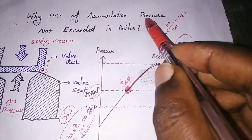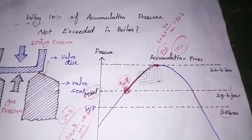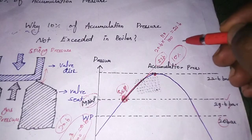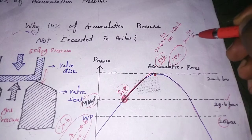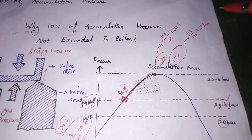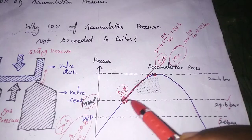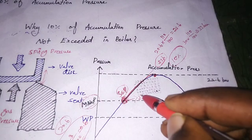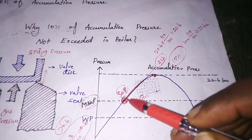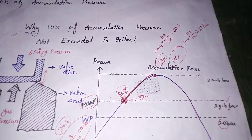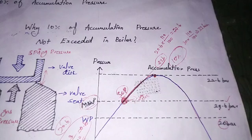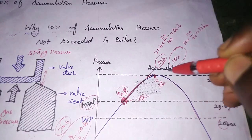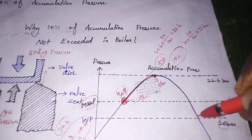This 10 percent accumulation pressure rule is common for all boilers. For example, consider a boiler where the safety valve is set at 30 bar. Ten percent of 30 bar is 3 bar, so the accumulation pressure is 33 bar. Although the safety valve opens, spring compression continues and boiler pressure keeps rising until it reaches 33 bar, at which point spring compression stops and pressure drop begins.